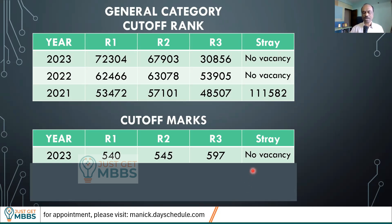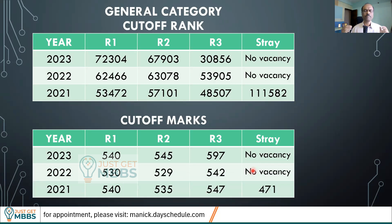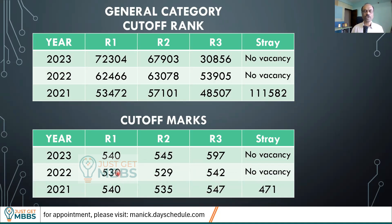Don't rely too heavily on NEET marks since they fluctuate each year. But roughly, you could see that 530 plus is a target to join this college. Looking at the data, scores of 529, 530, 535, 540 appear across rounds. Somewhere between 530 to 550 seems to be a safe score to target for KMC Mangalore under the general category.